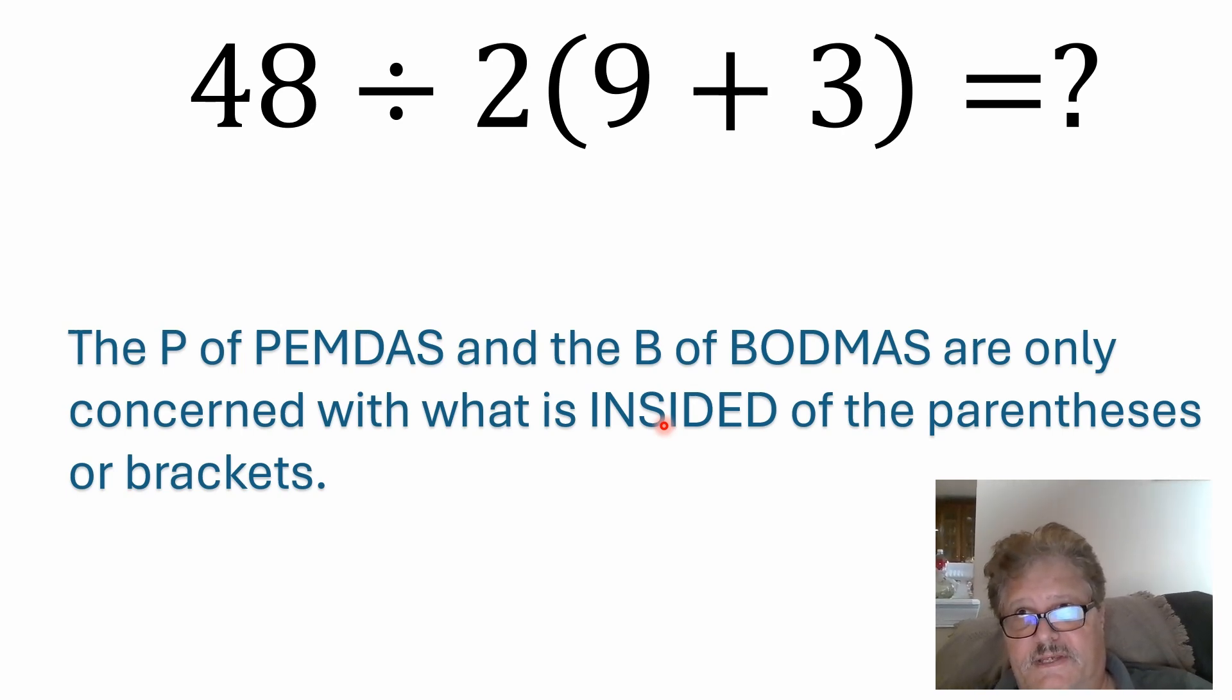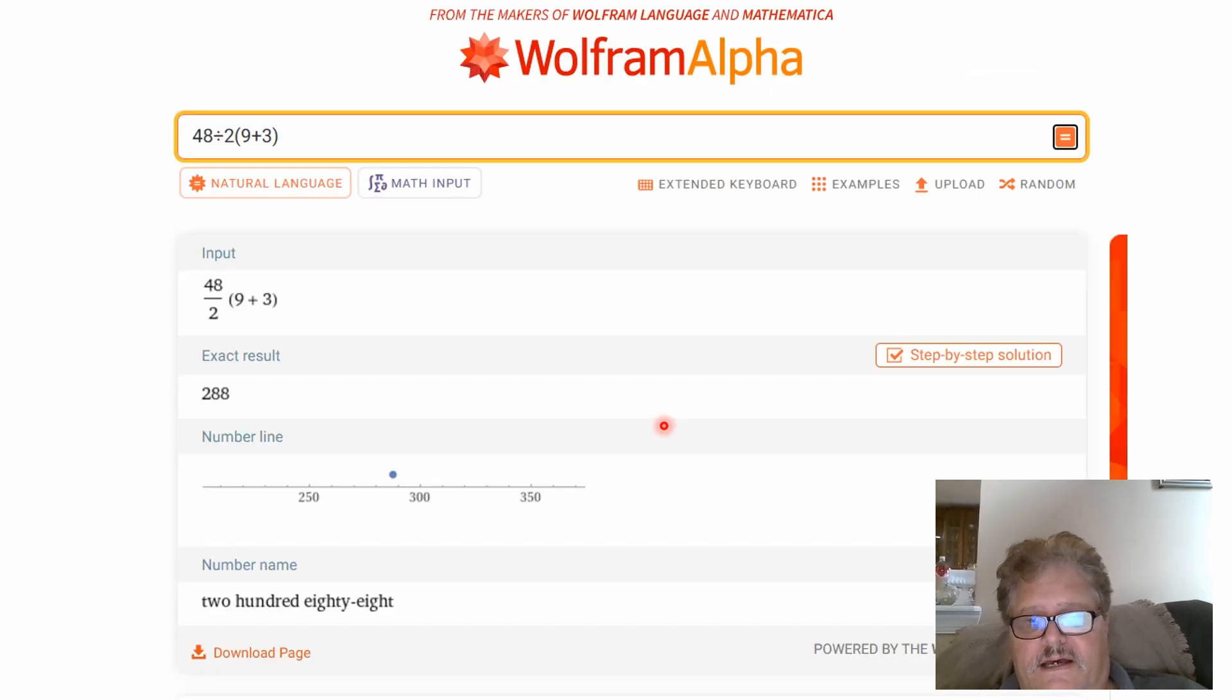You're really looking at something like PEJEMDAS, which I can't even say it, P-E-J-M-D-A-S. I have seen that listed before where the J represents your implicit multiplication by juxtaposition.